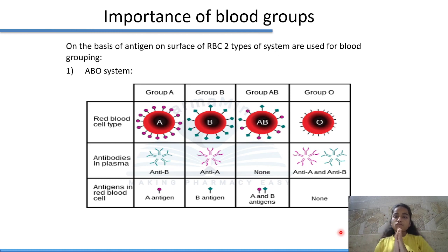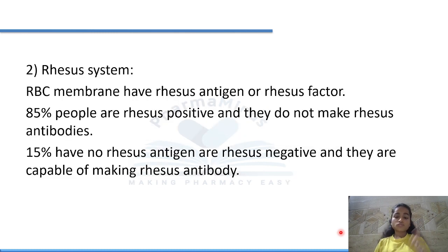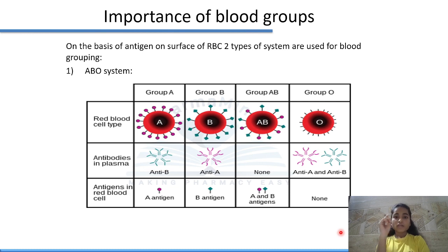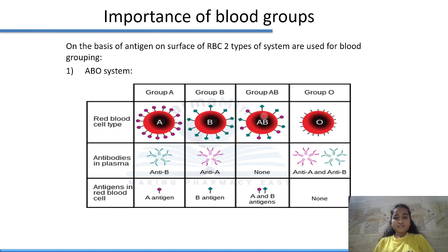Blood groups are classified on the basis of antigens present on RBCs. There are two major systems: the ABO system and the Rhesus (Rh) system.